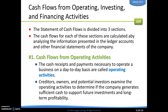The statement of cash flows is divided into three sections. The cash flows for each section are calculated by analyzing the information presented in the ledger accounts and other financial statements. You actually can't do the statement of cash flows until you've updated all of your ledger accounts and completed your other three financial statements, because we need all of those to create our statement of cash flows.